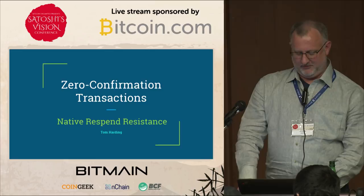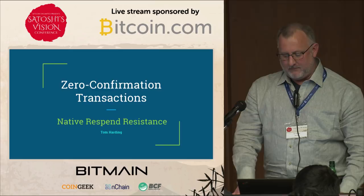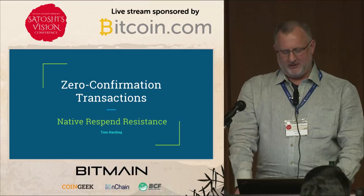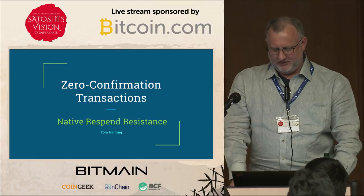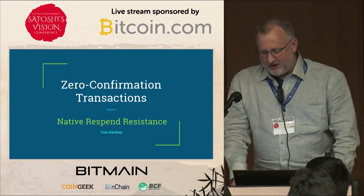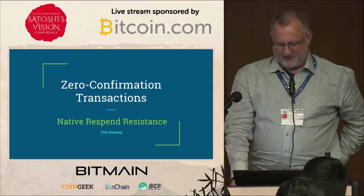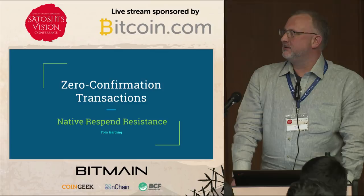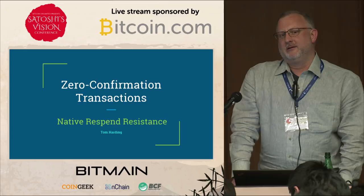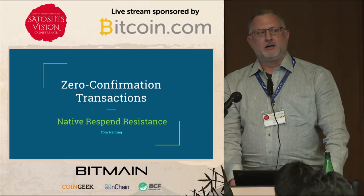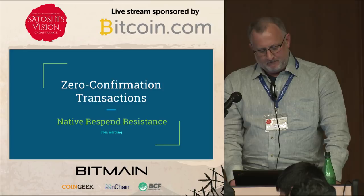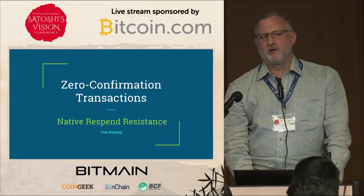I'm Tom Harding, I maintain Bitcoin XT, which is one of those implementations Vinnie was talking about. Bitcoin XT is probably the embodiment of the maxim that if at first, second, third, and fourth you don't succeed, keep trying to raise the block size limit and you'll eventually be rewarded. Today I'm discussing zero-conf transactions and what I'm terming 'native respend resistance' — the property that Bitcoin Cash resists double spends without needing a second-layer network — and how we can make that better.